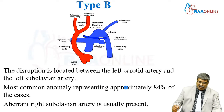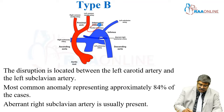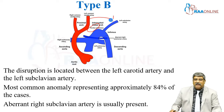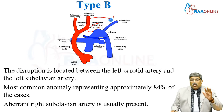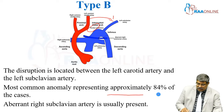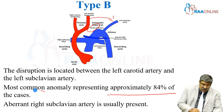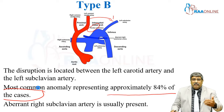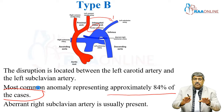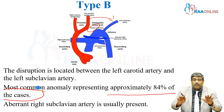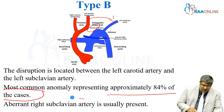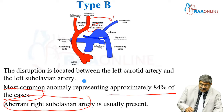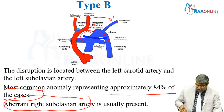Coming to type B, the lesion is located between the left common carotid and the left subclavian artery. This is the most common anomaly, representing around 84% of cases. Another main anomaly associated with type B interrupted aortic arch is the aberrant right subclavian artery.